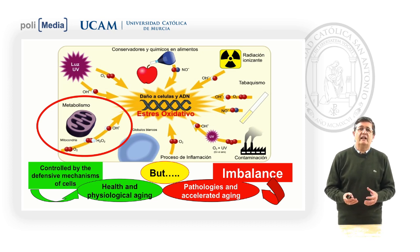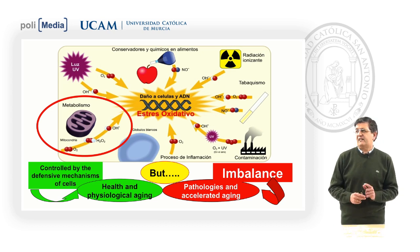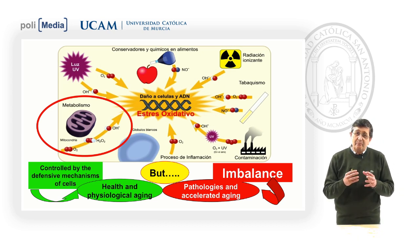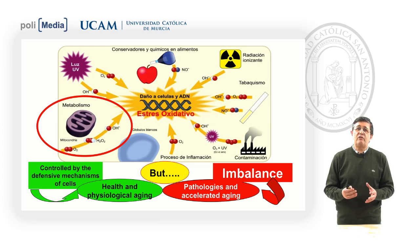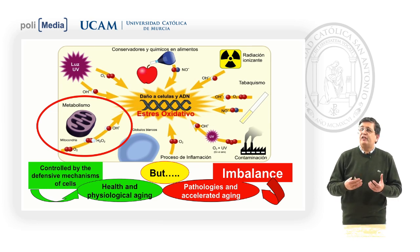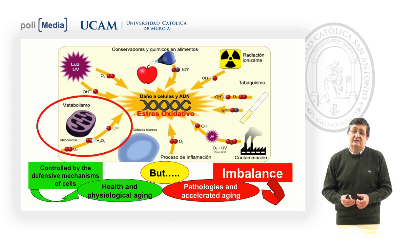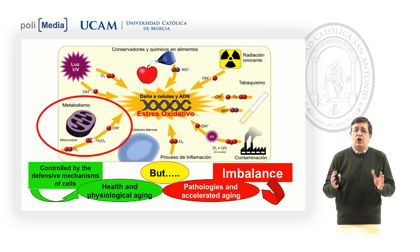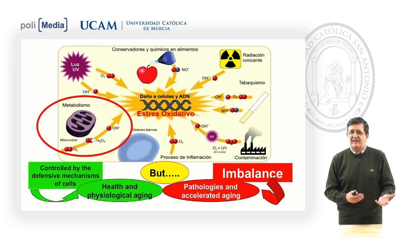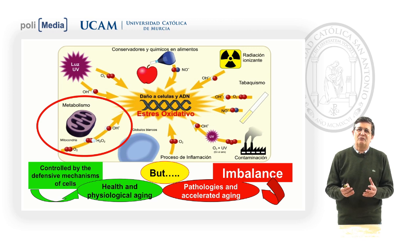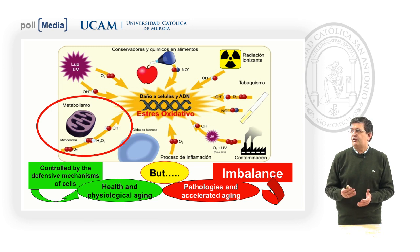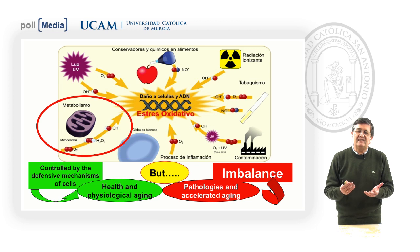If our endogenous mechanisms can block these radicals, we have a healthy and physiological aging. But with a logical imbalance in different situations — in our work, stress — this imbalance supposes the probable generation of pathologies and accelerating aging.